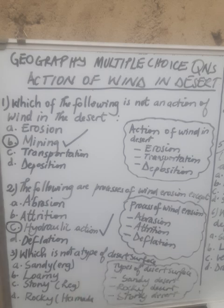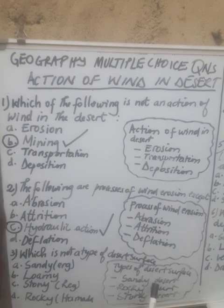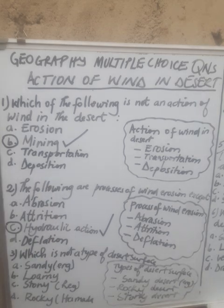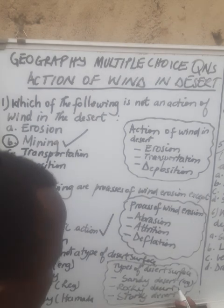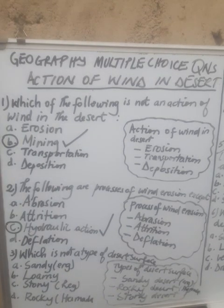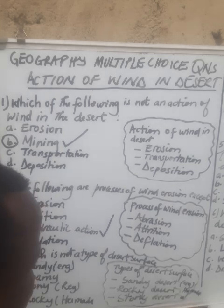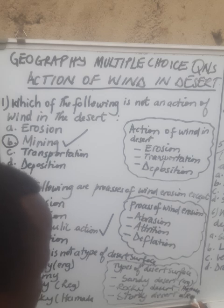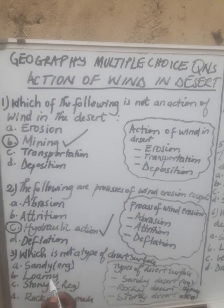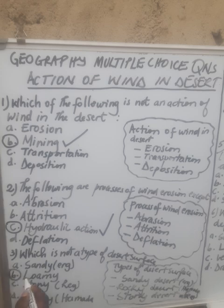Question number three is asking: which is NOT a type of desert surface? Remember there are different types of desert surface. We have sandy desert, which is a desert covered by sand — it is otherwise called erg. We have rocky desert, which is a desert covered by rocks — it is otherwise called hamada. And we have stony desert, which is a desert covered by stones — it is otherwise called reg. The options given are: sandy, romy, stony, and rocky. The correct answer is B, because romy desert does not exist.